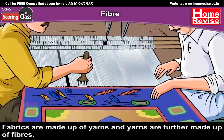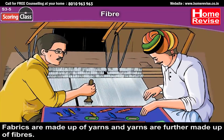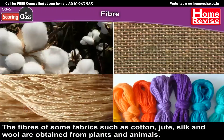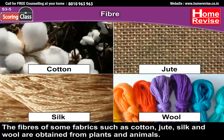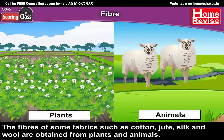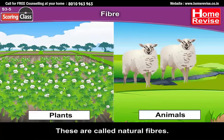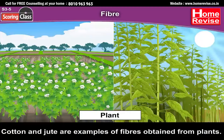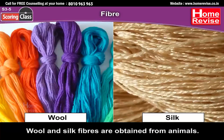The thin strands of thread that we see are made up of still thinner strands called fibres. Fabrics are made up of yarns, and yarns are further made up of fibres. The fibres of some fabrics such as cotton, jute, silk and wool are obtained from plants and animals, and these are called natural fibres. Cotton and jute are examples of fibres obtained from plants, while wool and silk fibres are obtained from animals.